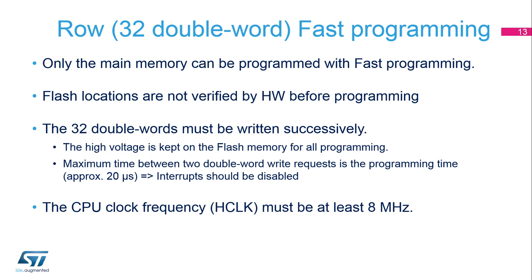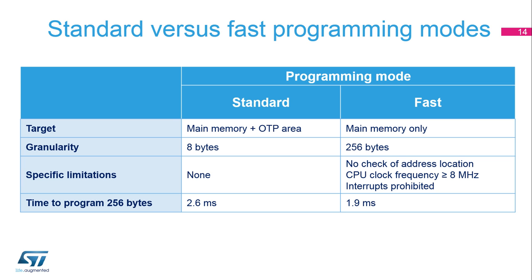The minimum clock frequency must be at least 8 MHz in fast programming mode. This slide compares standard and fast programming modes. Standard mode can be used to program the main memory and OTP areas, while fast mode cannot be used for OTP programming. Standard mode allows programming 64-bit double words (8 bytes), whereas fast mode only allows programming 32 double words, or 256 bytes. In fast mode, the address location content is not checked before programming. The CPU clock frequency must be greater than 8 MHz and interrupts are prohibited.